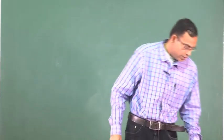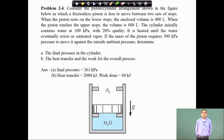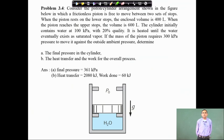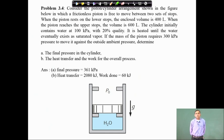We will now work out the next problem. Consider a piston-cylinder arrangement in which a frictionless piston is free to move between two sets of stops. When the piston rests on the lower stops, the enclosed volume is 400 litre, and when the piston reaches the upper stops, the volume is 600 litre. The cylinder initially contains water at 100 kilo Pascal with 20 percent quality. It is heated until the water eventually exists as saturated vapour. The mass of the piston requires 300 kilo Pascal pressure to move against the ambient pressure. Find the final pressure, heat transfer, and work done.